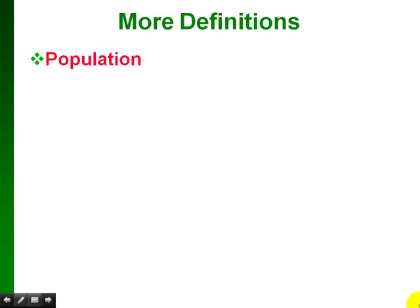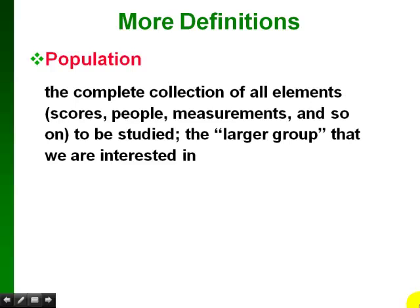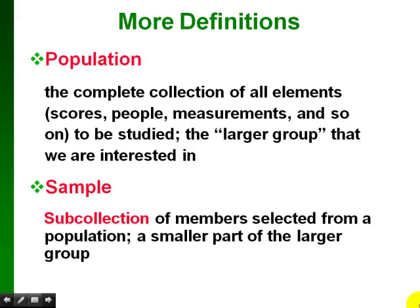When we talk about a population in statistics, this doesn't necessarily mean people — it's just a complete collection of all elements that we want to study. This could be something like test scores, people, or a whole set of measurements. A sample is a subset of the population — a smaller part of the larger group that we select from the population.